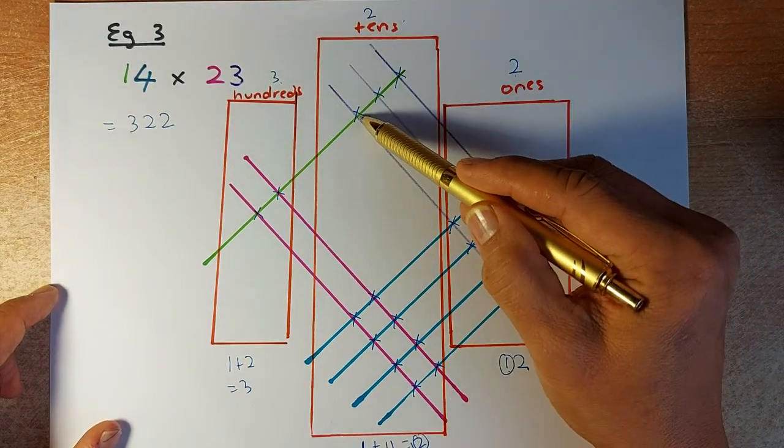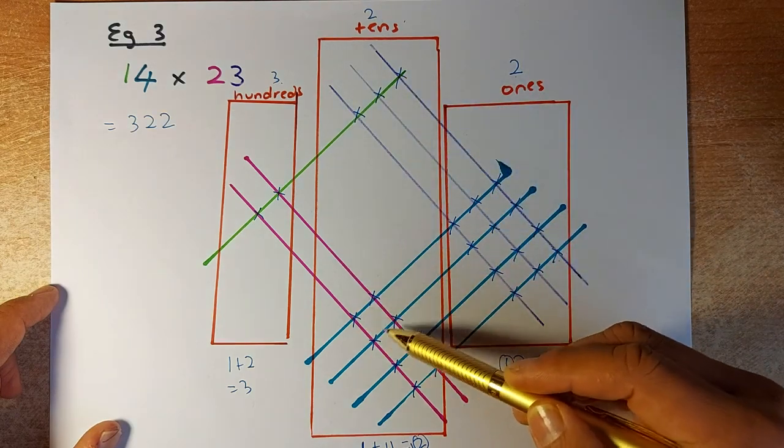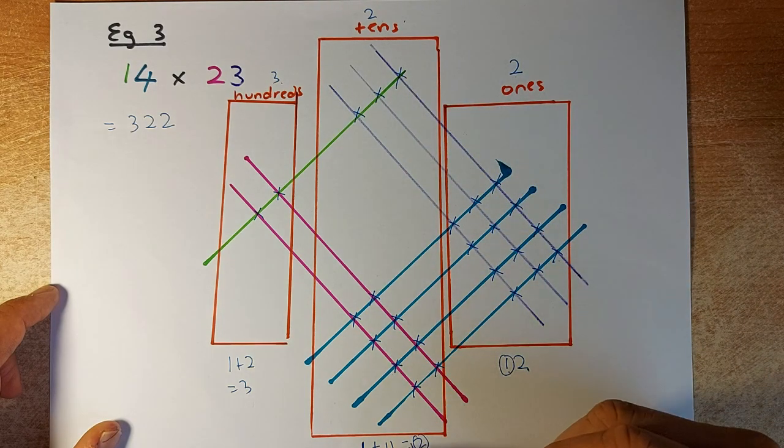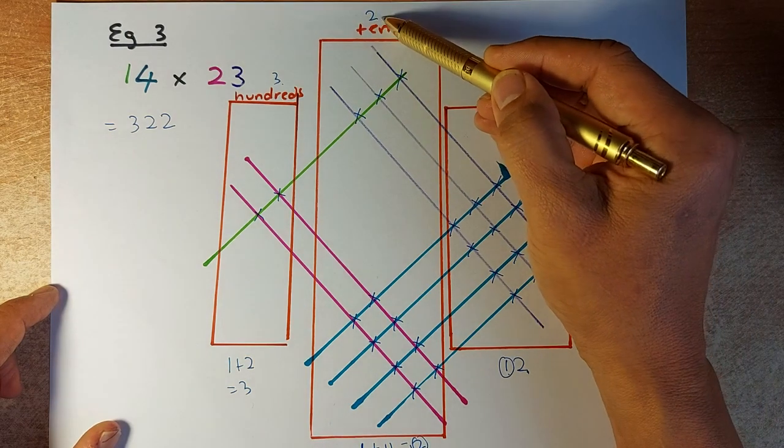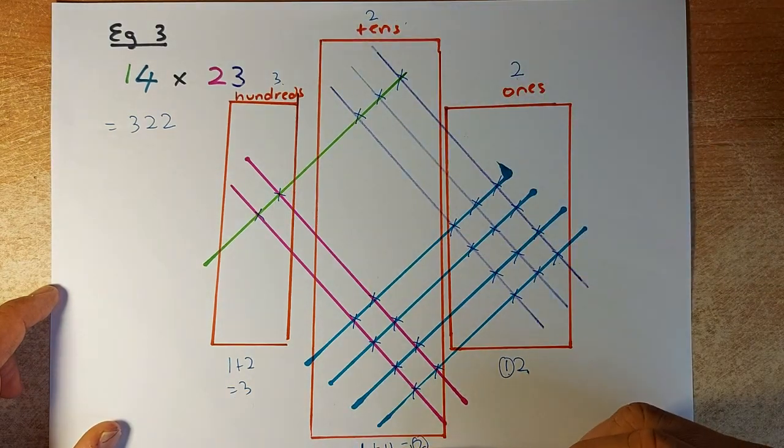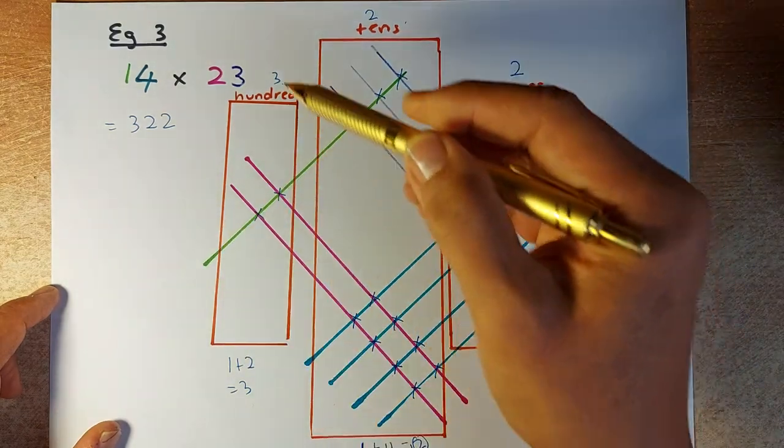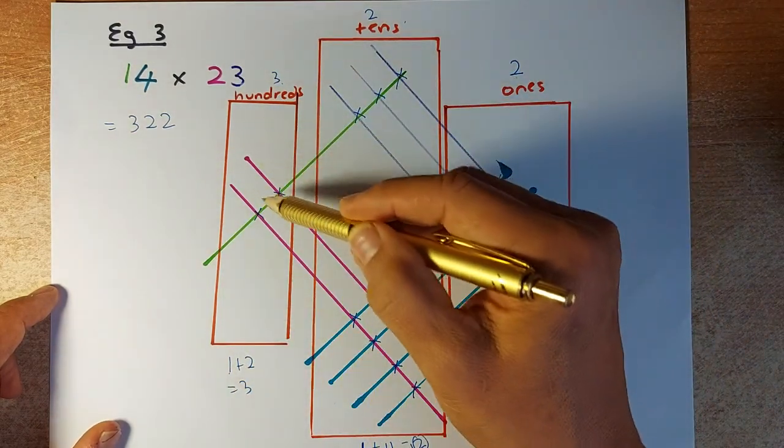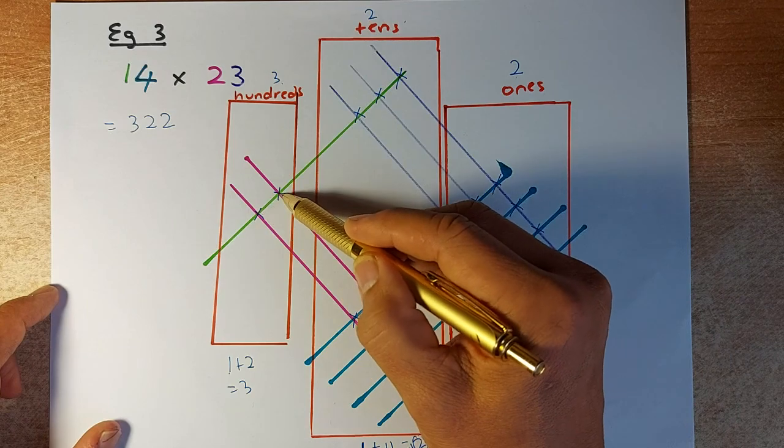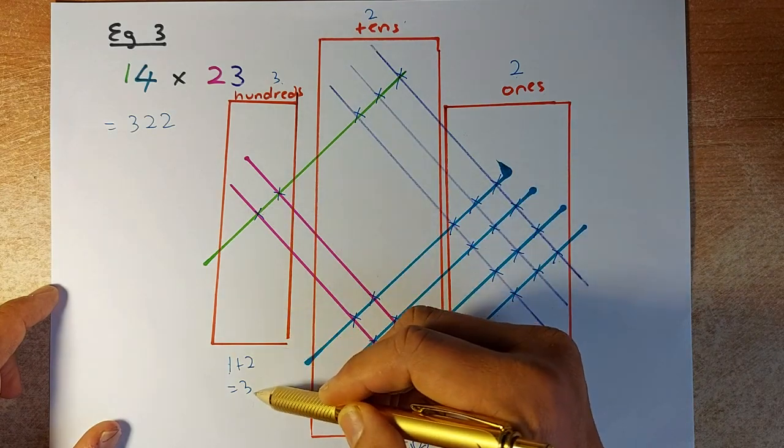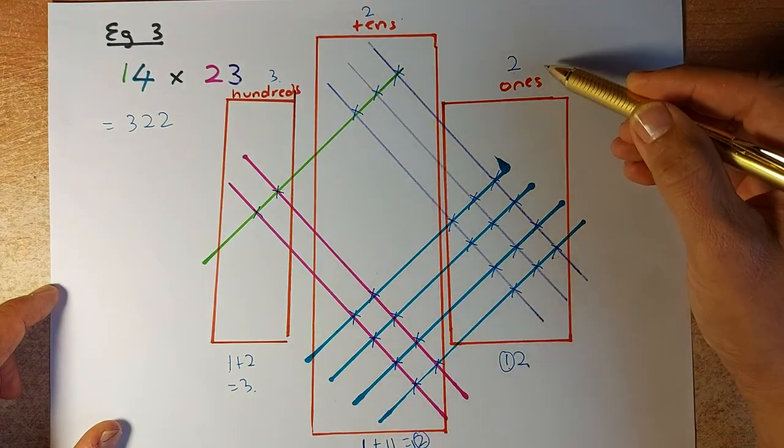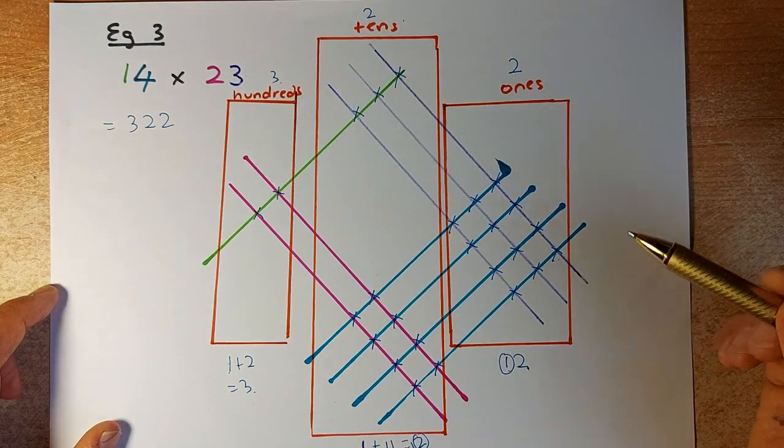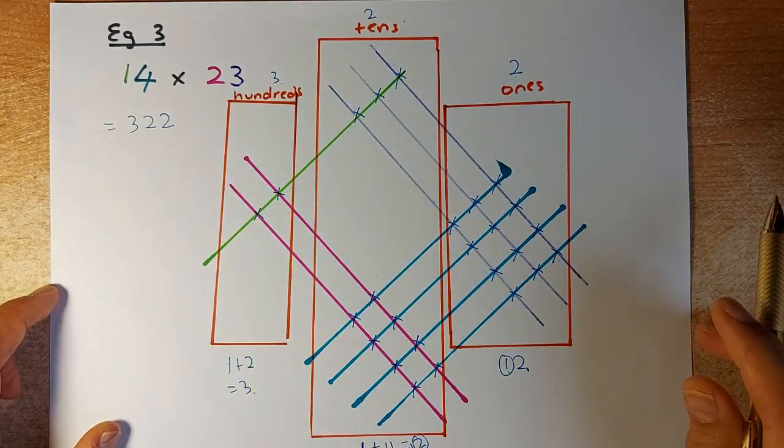For the tens, you calculate 1, 2, 3, 4, 5, 6, 7, 8, 9, 10, 11. So 1 plus 11 gives you 12. We retain the 2 in the tens column, but this 1 goes to the next column, which is the hundreds column. So 1 plus the intersection points: 1, 2. So 1 plus 2 is 3. The answer is 300 plus 20 plus 2, which equals 322.